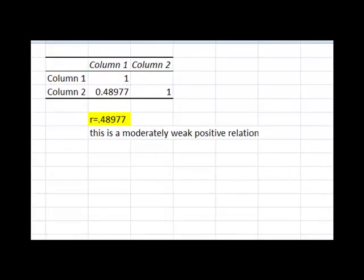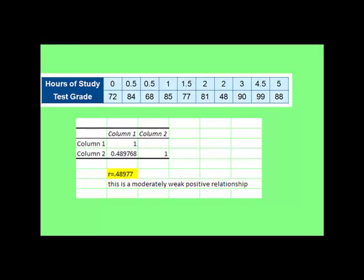Then R squared must be .48977 times .48977. So my rusty trusty calculator tells me that the R squared value to about two decimal places would be about .24.